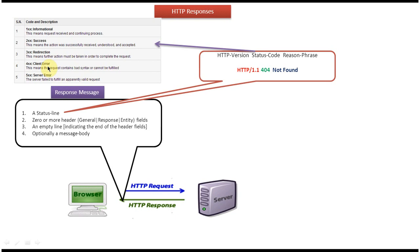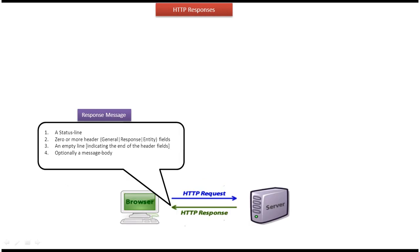The 400 series means client error, where the request contains bad syntax so it cannot be fulfilled. The fifth one, the 500 series, is server error, meaning the request is proper but the server is not able to process the request due to code or something, so it throws a server error to the client.